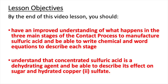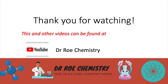That concludes this video lesson. After watching, you should now have an improved understanding of the three main stages of the contact process to manufacture sulphuric acid, and be able to write chemical and word equations for each stage. You should also understand that concentrated sulphuric acid is a dehydrating agent and its effects on sugar and hydrated copper 2 sulphate. This and other GCSE, AS, and A-level chemistry videos can be found on our YouTube channel, Doctor O Chemistry. Thank you for watching.